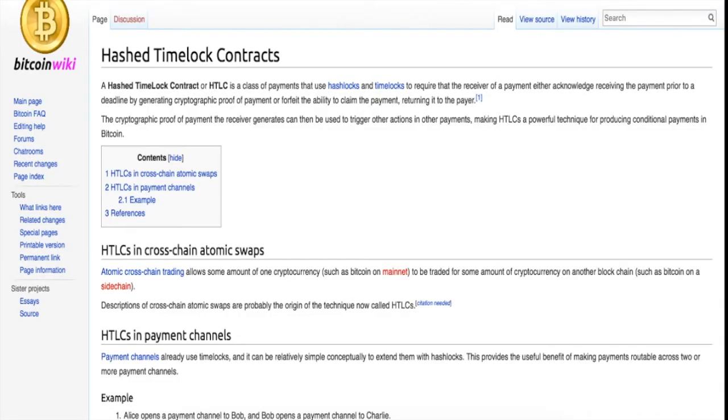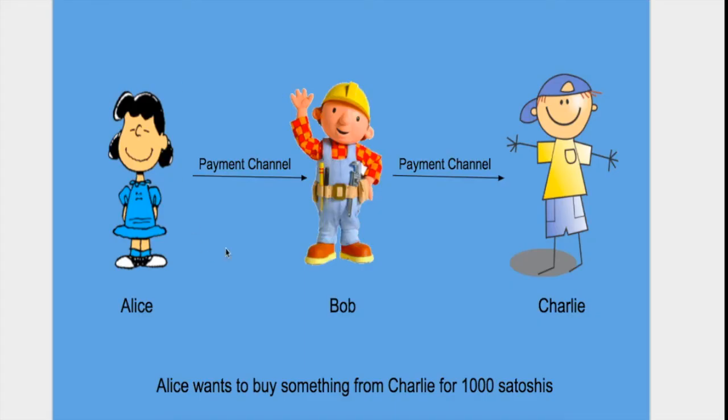Hi, this is Radnav. Welcome to the channel. Today we'll be talking about hash time lock contracts and how they are beneficial for making payments routable across two or more payment channels. We'll go through an example that uses hash time lock contracts in which a person wants to pay some money or Bitcoin to another person but doesn't have a direct payment channel open with them.